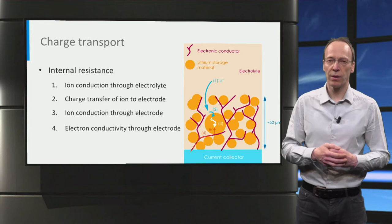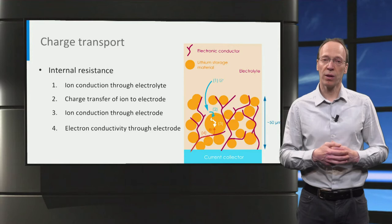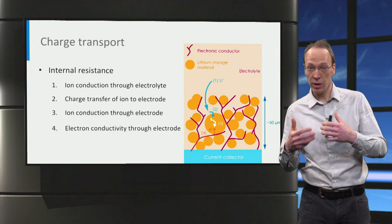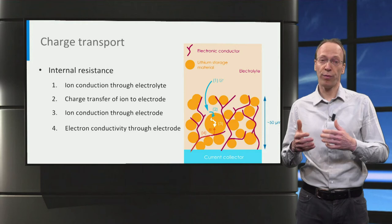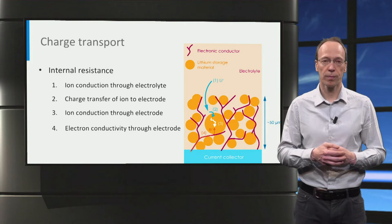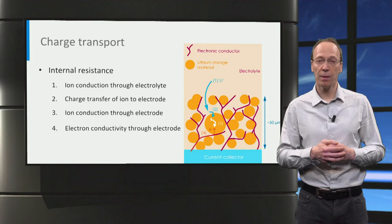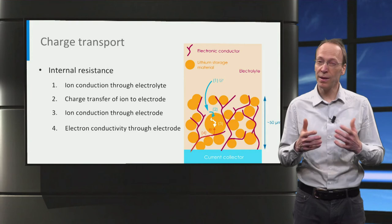Looking into batteries, there are four main contributions to the internal resistance. Lithium-ion conduction through the electrolyte — in many cases, lithium-ion transport through the electrolyte in the pores of the electrode dominates the internal resistance, and therefore it determines for instance the discharge time and the power density.